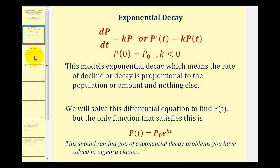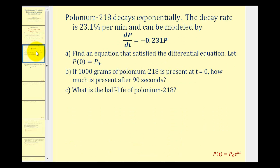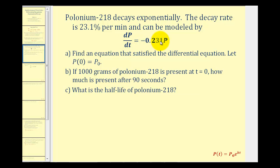Let's take a look at our first example. Polonium-218 decays exponentially. The decay rate is 23.1% per minute, and can be modeled by the differential equation dp/dt equals negative 0.231 times p. Because we have exponential decay, notice how this derivative equals this constant — our decay rate — times the function p.